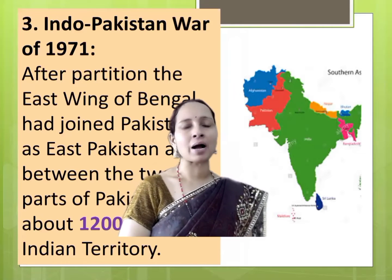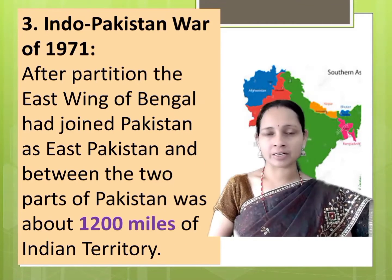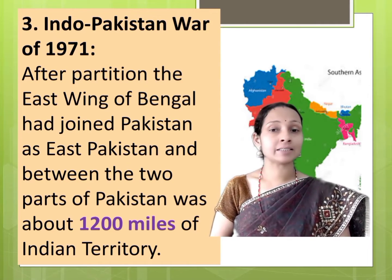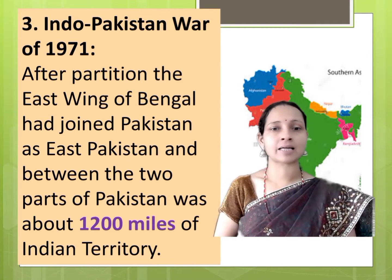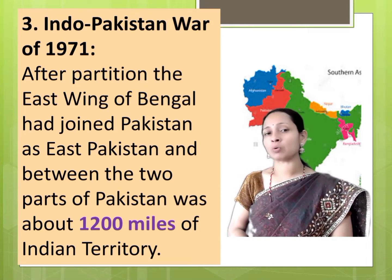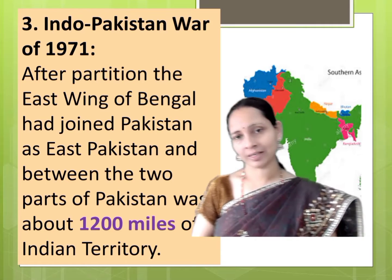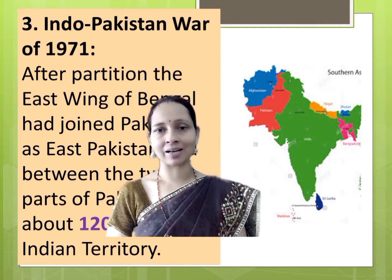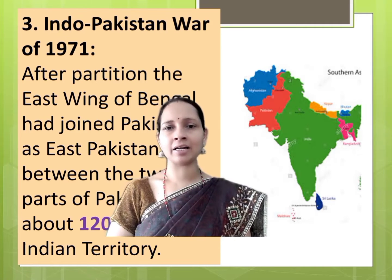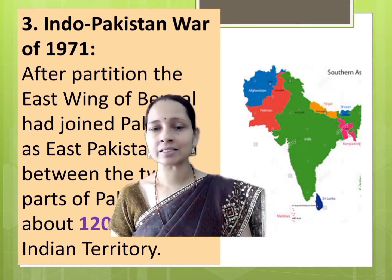Third war: Indo-Pakistan war of 1971. After partition, the east wing of Bengal had joined Pakistan as East Pakistan, and between the two parts of Pakistan was about 1,200 miles of Indian territory. Put a glance on the map — by the red color you can get the exact idea about the location of Pakistan and East Bengal.